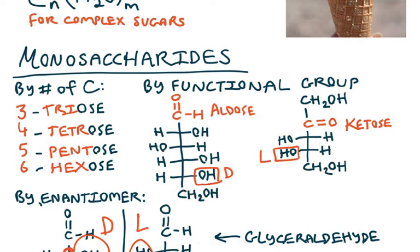So if we want to put all of these naming things together, we can say something like a D-aldohexose, or an L-pentose ketose.